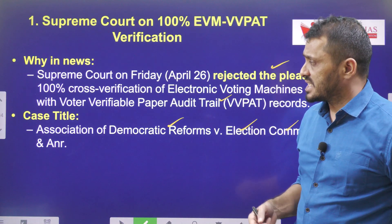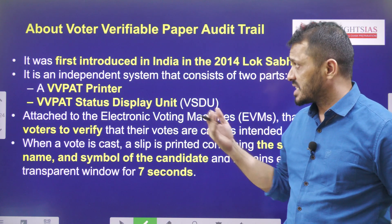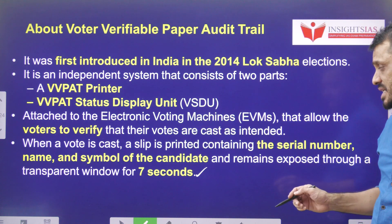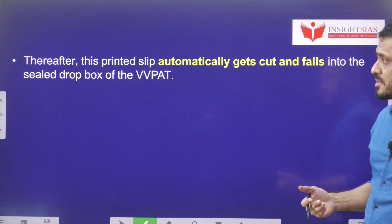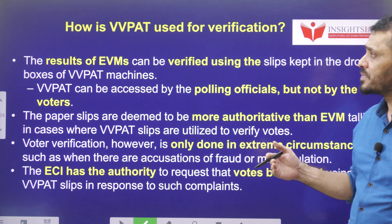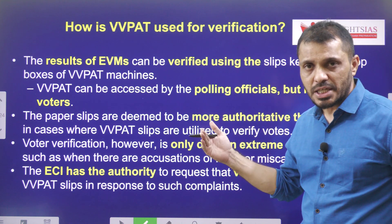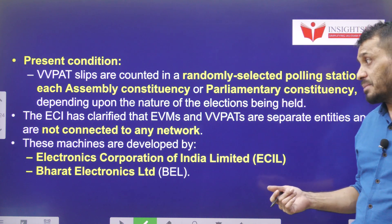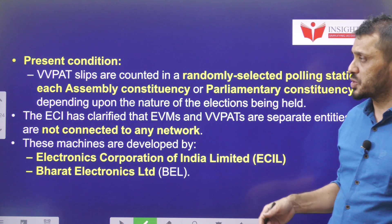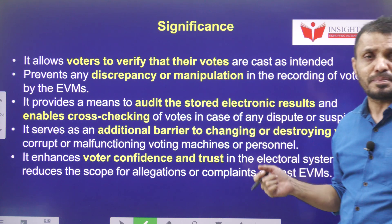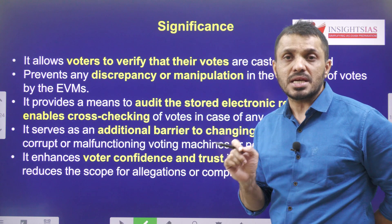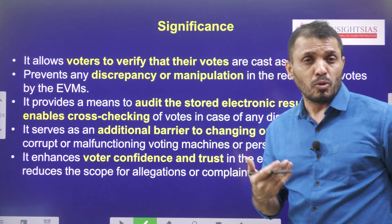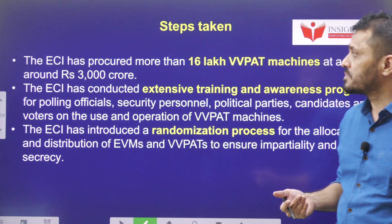As background, VVPAT was first used experimentally in the 2014 election. It includes a VVPAT printer and a status display unit where information is displayed for seven seconds — candidate name, serial number, and political party symbol — before automatically dropping into an attached box. Five percent of VVPATs are randomly selected and tallied with EVM results. VVPATs were developed by ECIL and Bharat Electronics Limited. The significance is that VVPATs improve transparency and motivate greater public participation in elections.